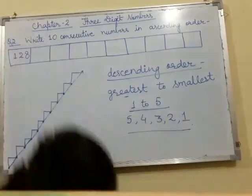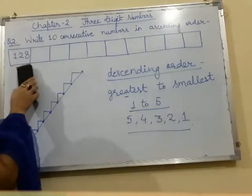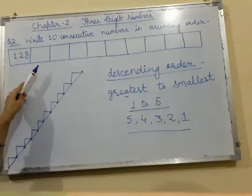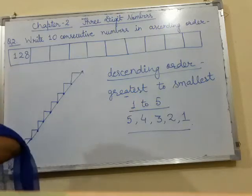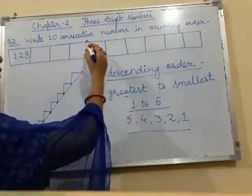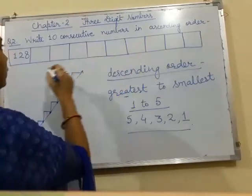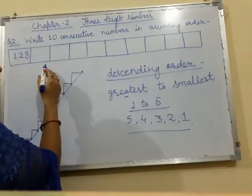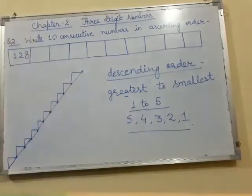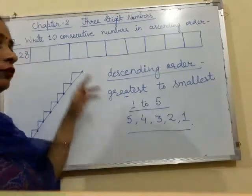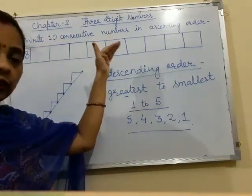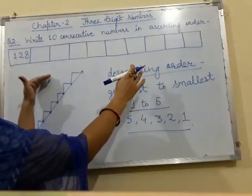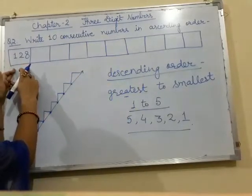अब आपके question में दिया हुआ है: 128 को ascending order में लिखना है. Write 10 consecutive numbers in ascending order. 128 आपको question में दिया हुआ है. Consecutive means लगातार — means continuously 10 numbers ascending order में लिखने हैं. आपको number दिया हुआ है: 128.